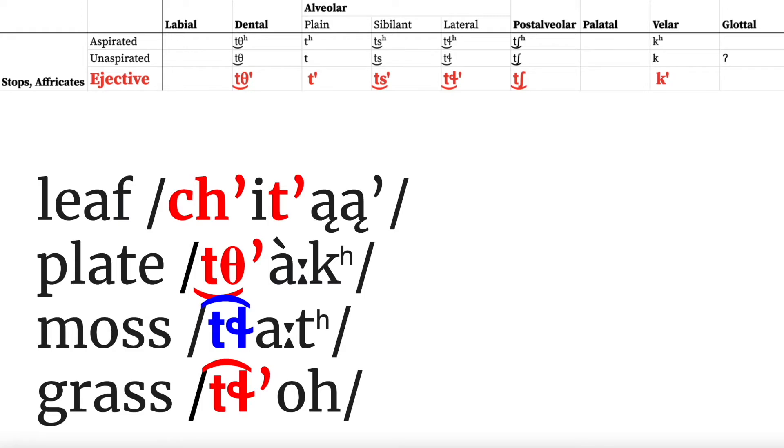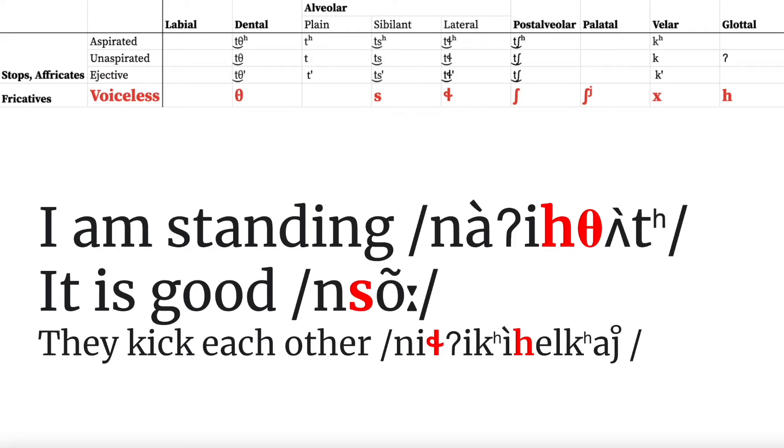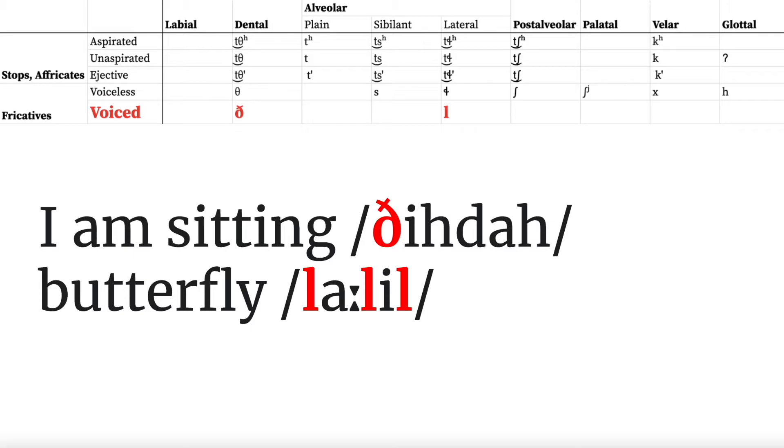Note that stops and affricates are not distinguished by phonemic voicing. Upper Tanana also features a mostly full set of voiceless fricatives, although only dental and lateral fricatives distinguish voicing, which is unusual for Dene languages.